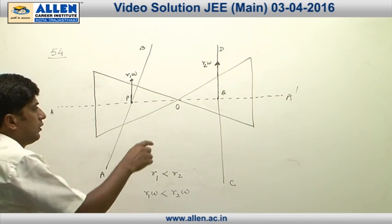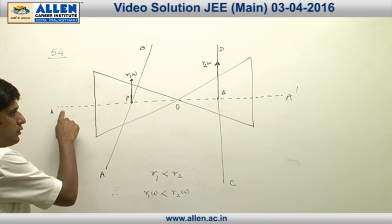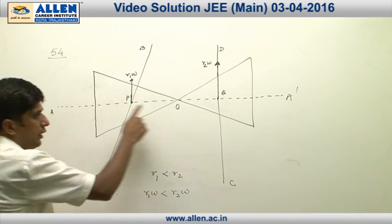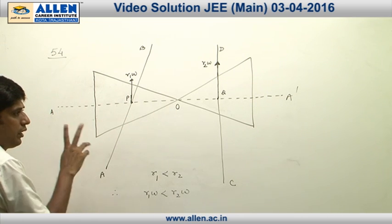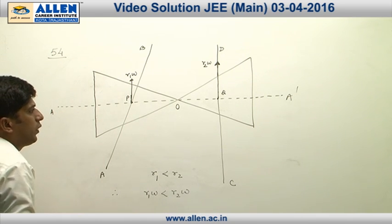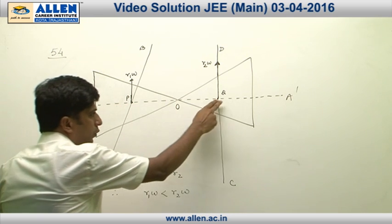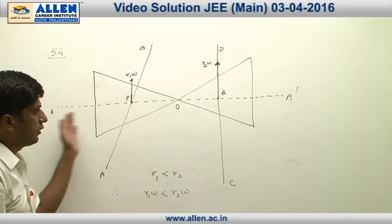Now consider the symmetrical axis of this roller, that is AA', which is represented by a dotted line here. Also consider two points, point P and point Q, which lie on the same axis.